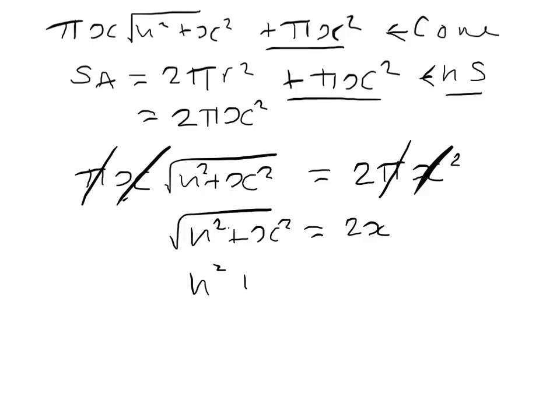I will have h squared plus x squared equals 4x squared. Then I'll have h squared equals 4x squared minus x squared, which I can write as 3x squared.